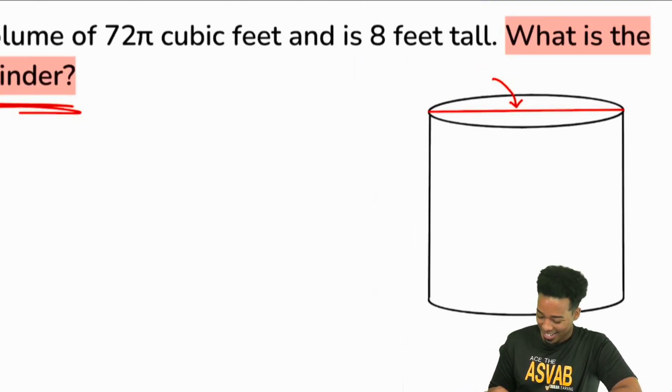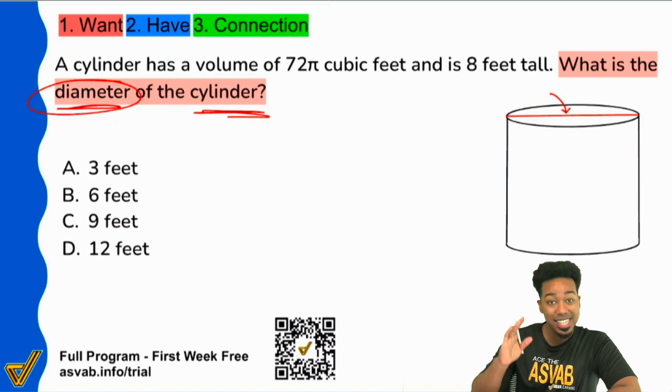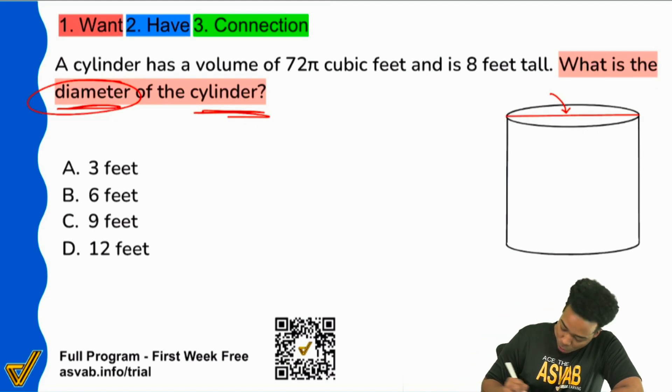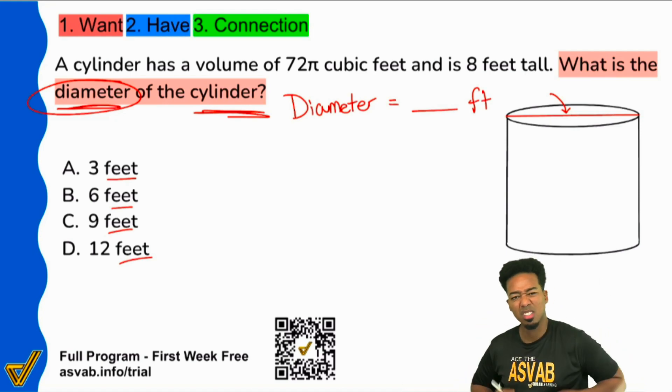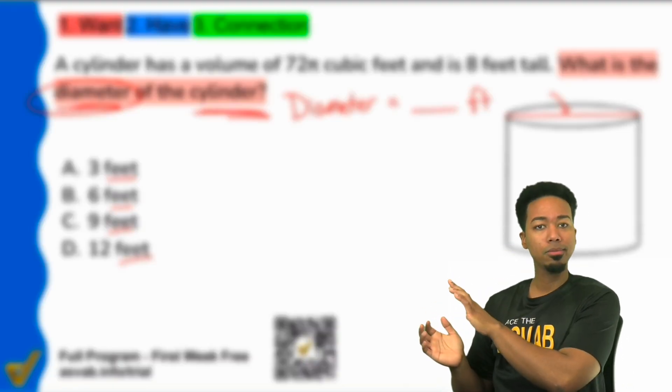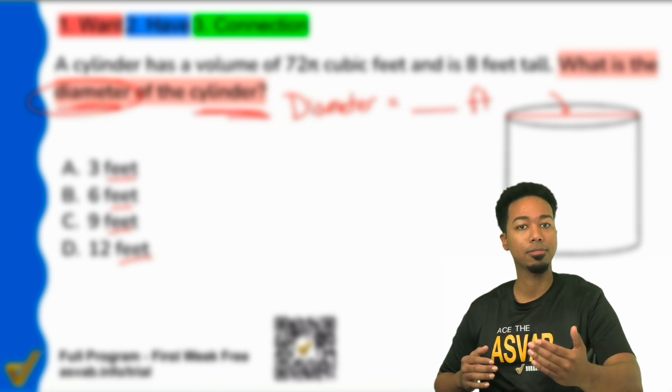So let's go ahead and have some fun. Let's see how we're going to get this done. We want the diameter. So diameter equals blank. And we see that the choices tell us feet. So I'll go ahead and say blank feet. And if a problem like this is kind of hard for you, don't worry, you're not alone.